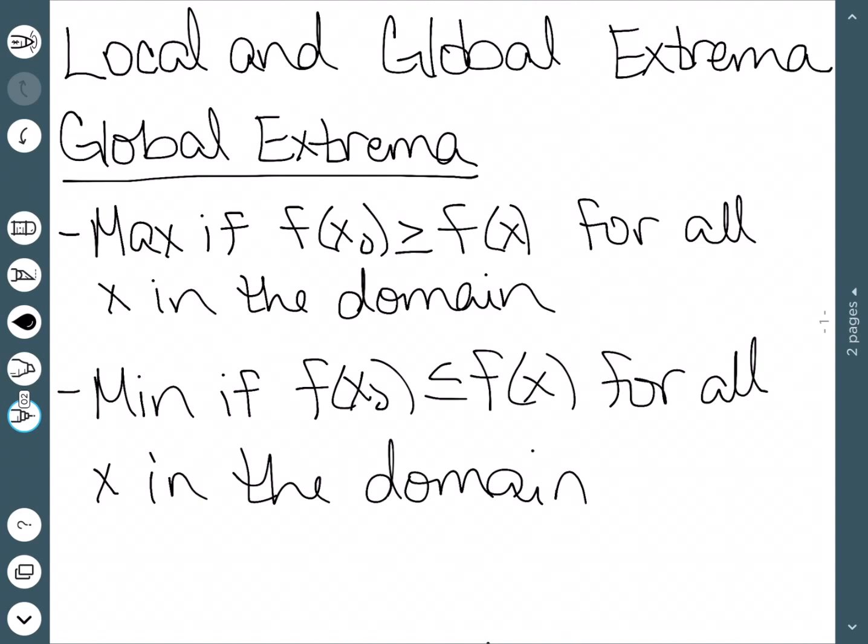We also have a global minimum. This is when f(x₀) ≤ f(x) for all x in the domain. So this is the absolute lowest point in your graph. It is less than every other point in your graph.